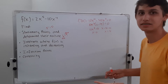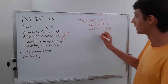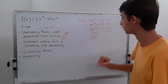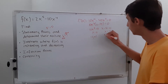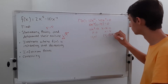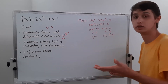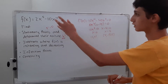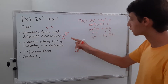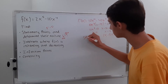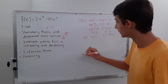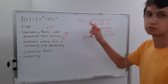Plugging x equals zero into the original gives you the point (0, 0). Plugging in x equals four involves more calculation and gives negative 512. So these are your two stationary points: (0, 0) and (4, negative 512). To determine their nature, you have to find if each is a minimum or a maximum.